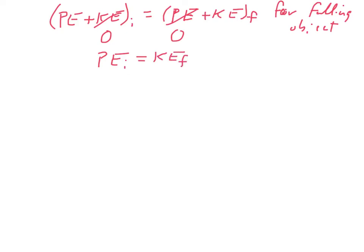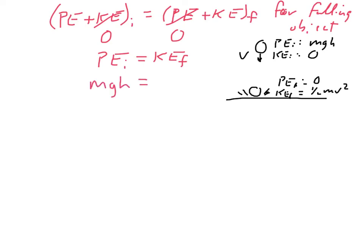Potential energy of the initial is always going to be MGH. Kinetic energy initial, if it's being released from rest, is zero. Potential energy final is always going to be zero because it's at the ground. Kinetic energy final is going to be one-half MV squared. That leads us to this equation: the potential energy initial equals kinetic energy final. So we have MGH equals one-half MV squared.